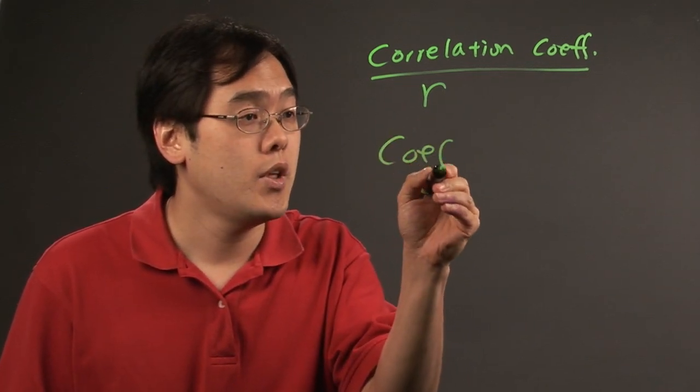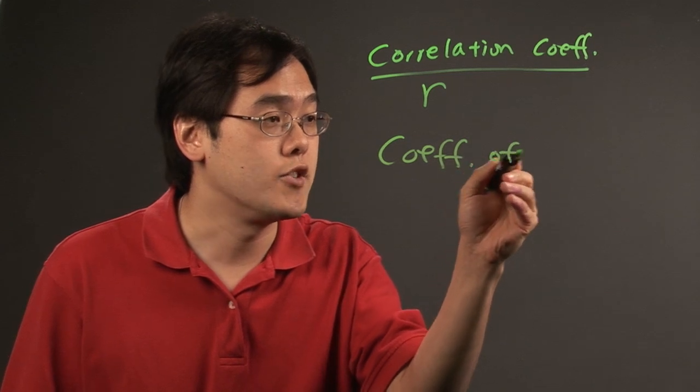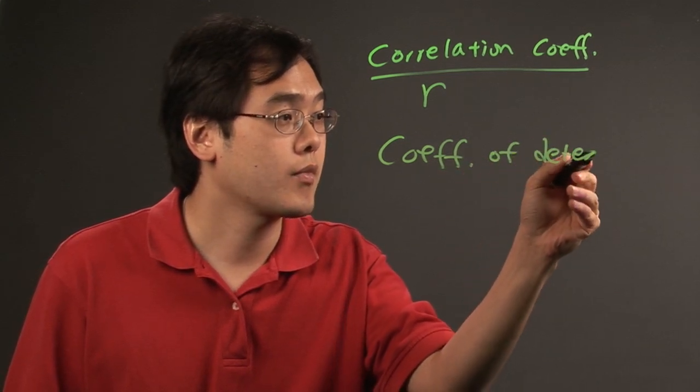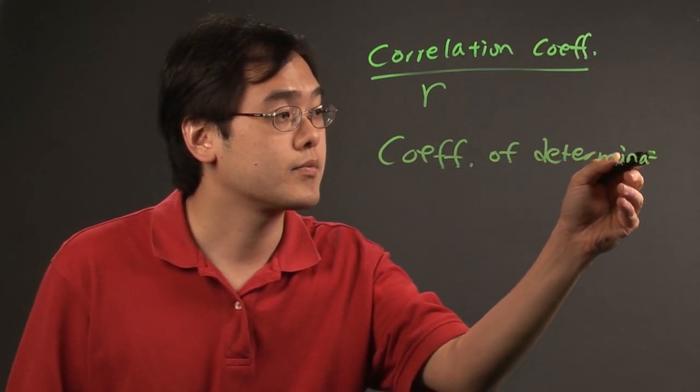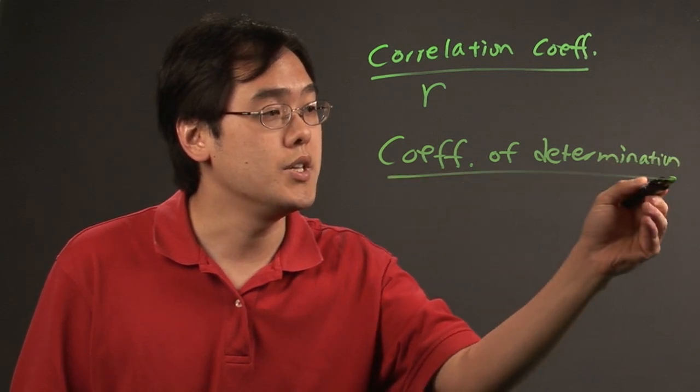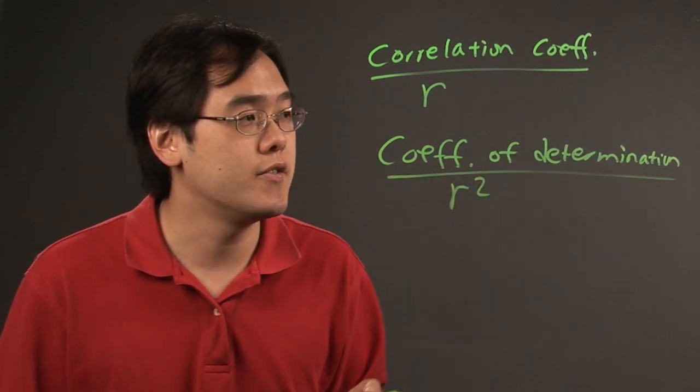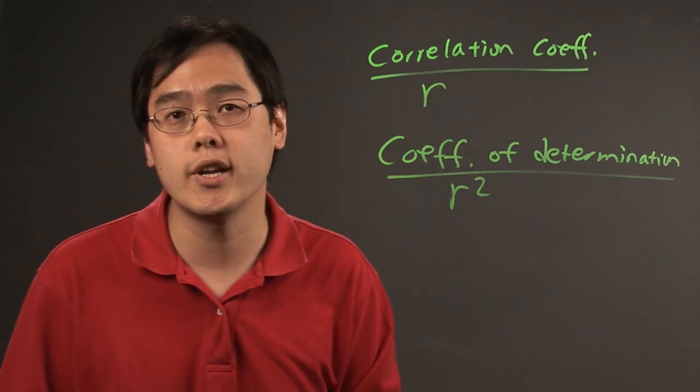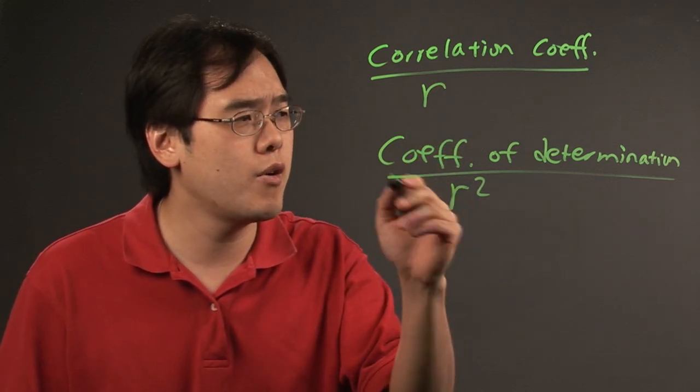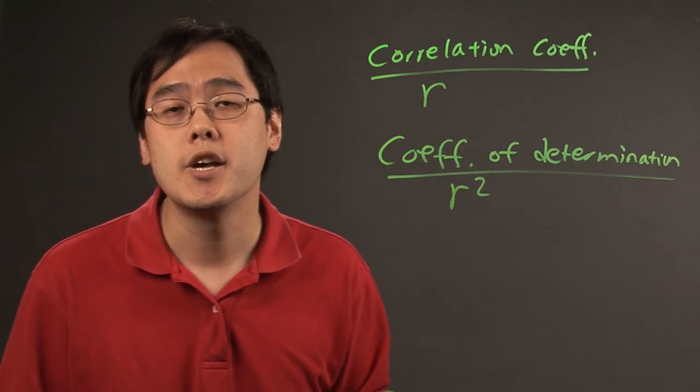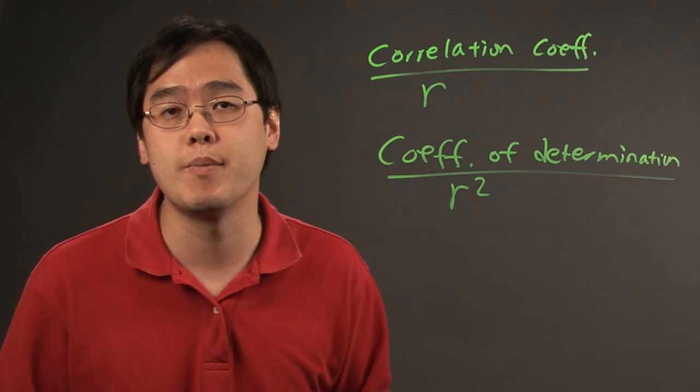The coefficient of determination is denoted by r squared. So basically to find the coefficient of determination you're squaring the correlation coefficient. What the coefficient of determination helps you determine is the percentage of data that is closest to the best fit line.